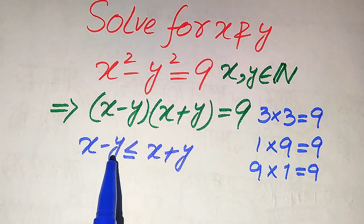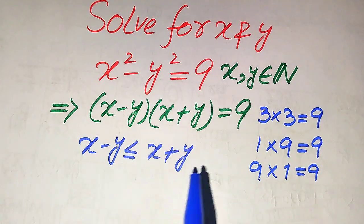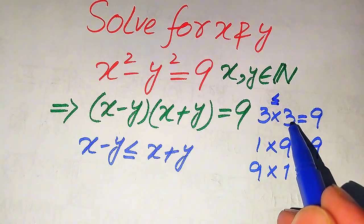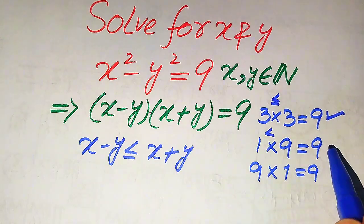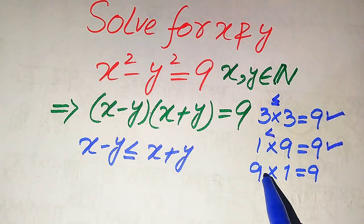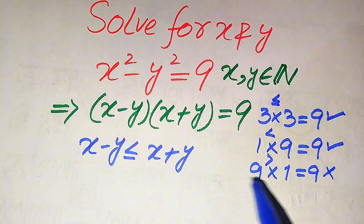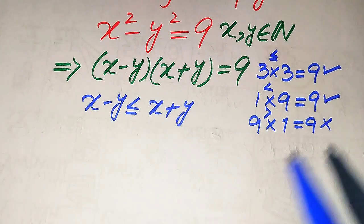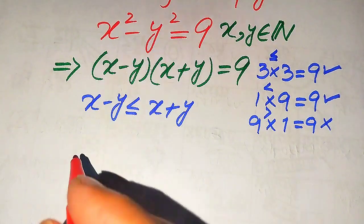We need to make the relation between the two factors, knowing that our first factor is always less than or equal to the second factor. So we choose pairs where the first factor is less than or equal to the second. That gives us (3,3) and (1,9), but not (9,1) since 9 is greater than 1. So we have two valid cases.